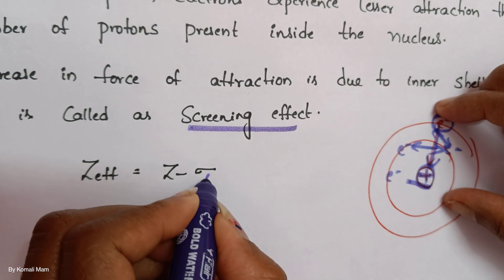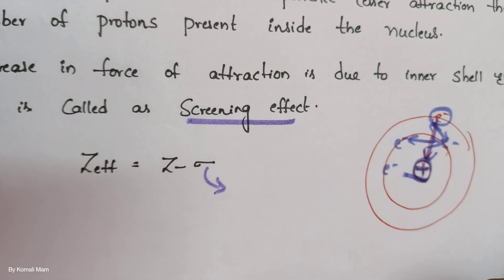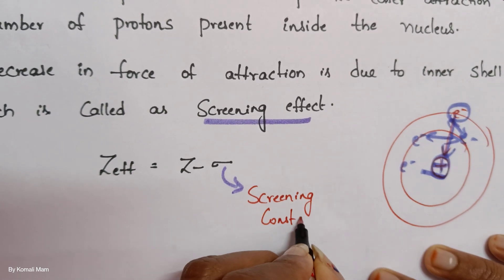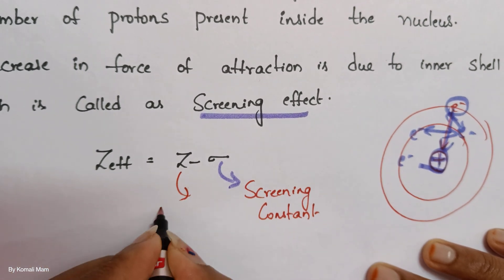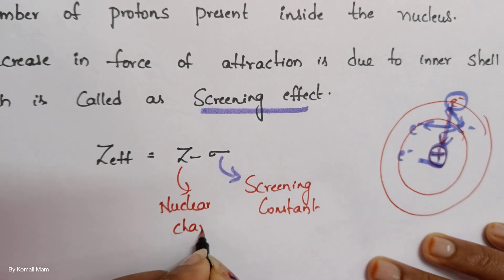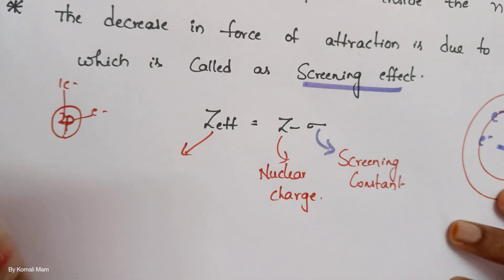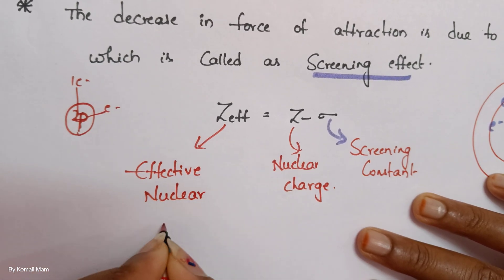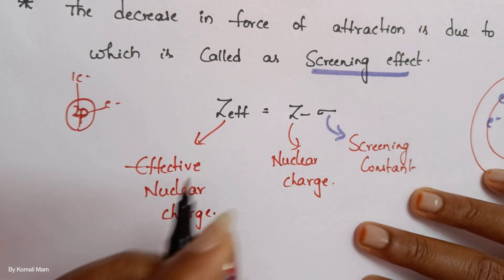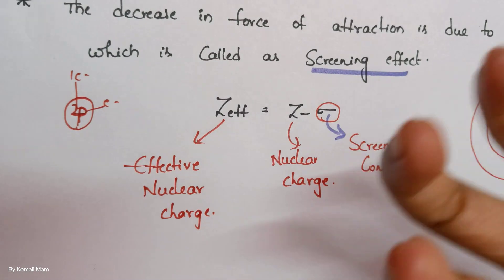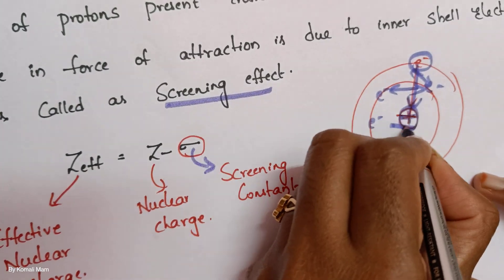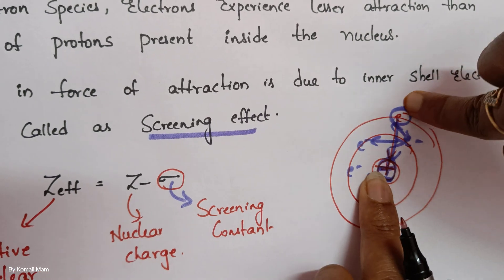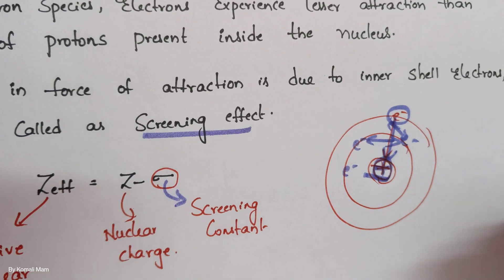And how to calculate the repulsions value — that is sigma. Sigma is the screening constant. Z is the number of protons, that is nuclear charge. Z* is the effective nuclear charge. What is the meaning of effective nuclear charge? If it is having 30 protons, it should show that much attraction. But there are some repulsions. After repulsions, what is the net attraction of the nucleus on the outer electron? That net attraction is called effective nuclear charge.